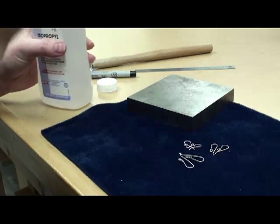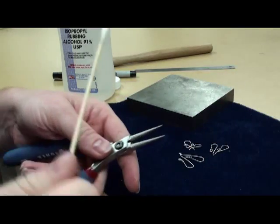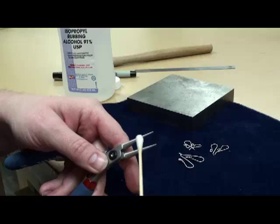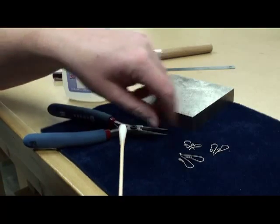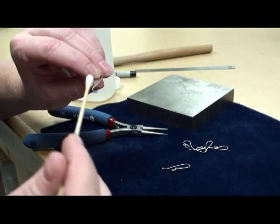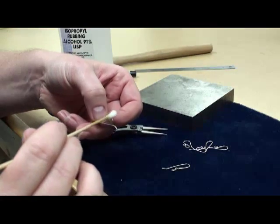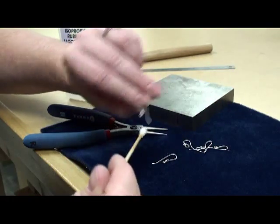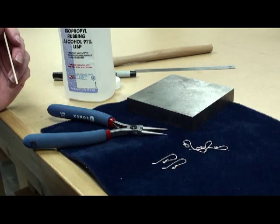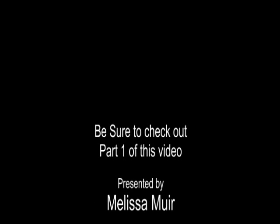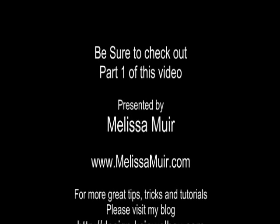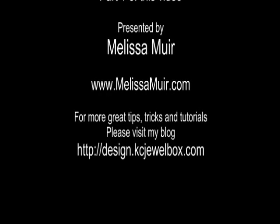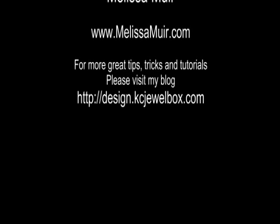Just that rubbing alcohol that you get from the stores. And I bring that in and then I can remove that Sharpie marker off of my pliers. And if you happen to have anything that still has that little Sharpie mark on your ear wires, you can also use that to remove any Sharpie marks. And there's your tutorial on how to make matching ear wires.